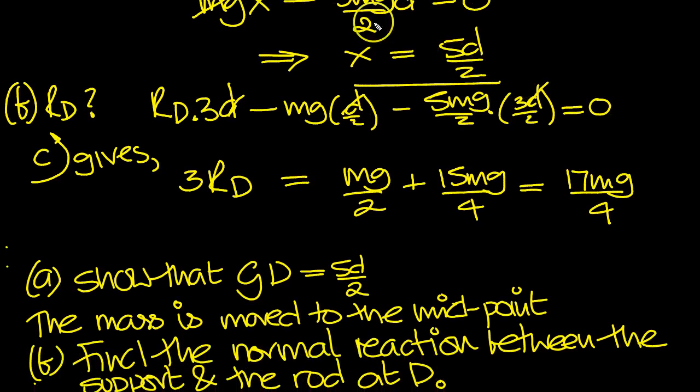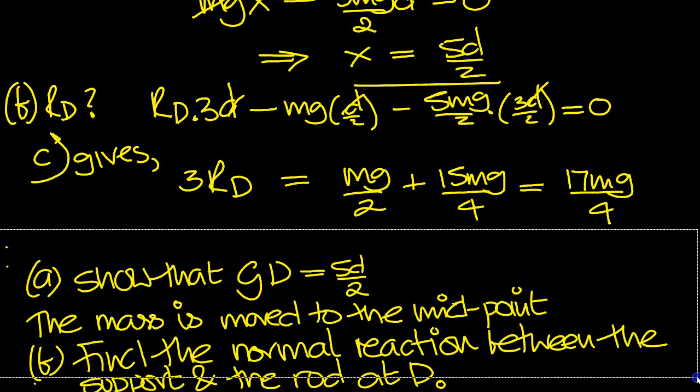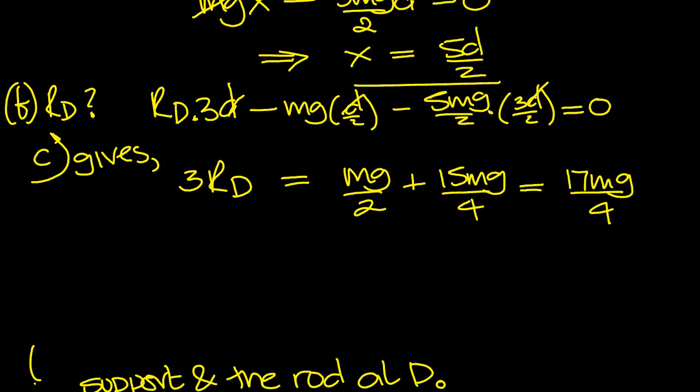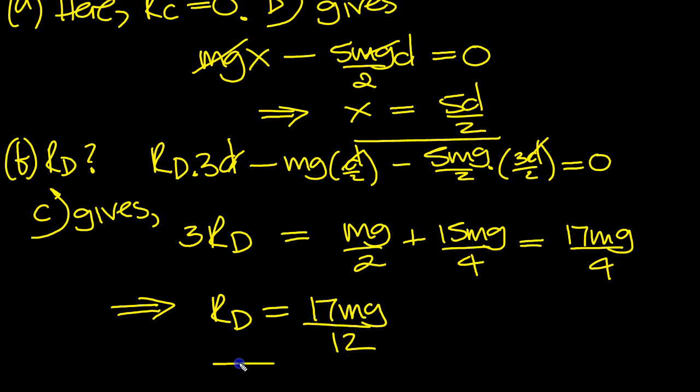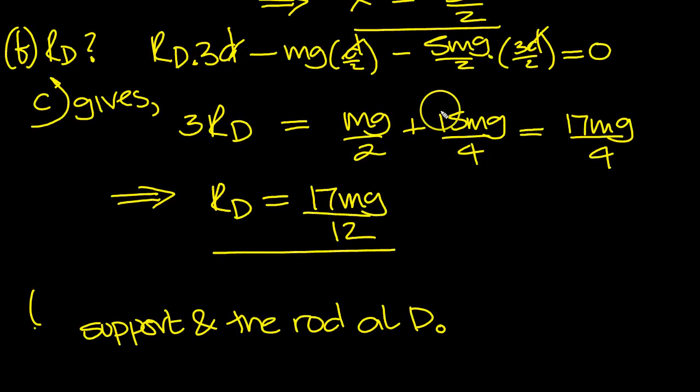So divide by 3 then. That tells us what RD is. RD is equal to 17MG over, divide by 3, 4 times 3 is 12. So the reaction at D is 17MG over 12, and that's what we wanted to work out.